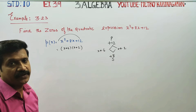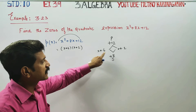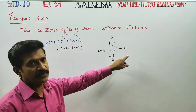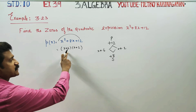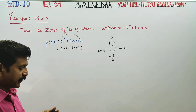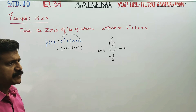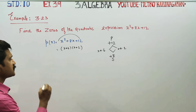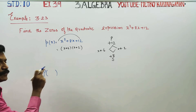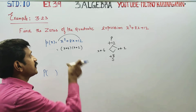This is stage 1. The product import — x plus 6 into x plus 2. This is the answer. Open and save. The zeros of the quadratic expression: zeros of the quadratic expression — which is the solution of the number.